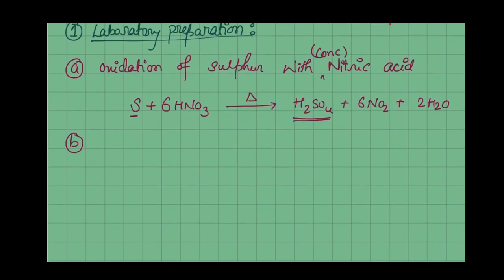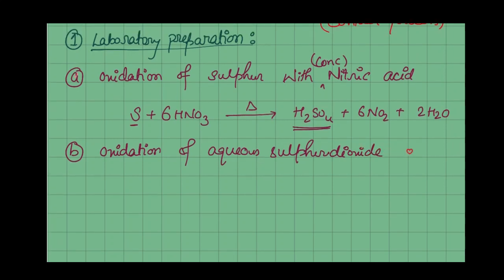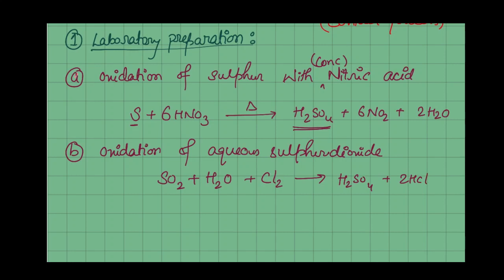The second method is again the oxidation of sulfur — specifically oxidation of aqueous sulfur dioxide. We can oxidize sulfur dioxide in different ways. One way is in the presence of chlorine: SO₂ (aqueous, i.e., dissolved in water) + Cl₂ gives H₂SO₄ + 2HCl. This is the overall reaction.